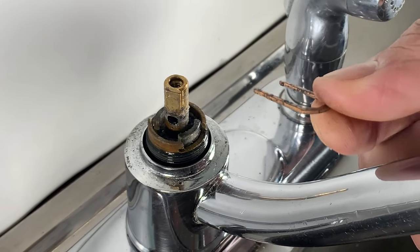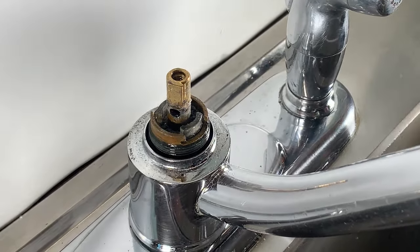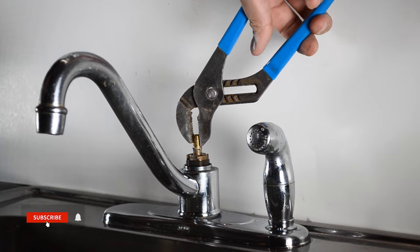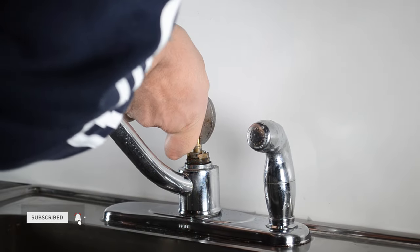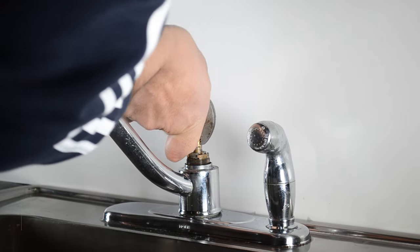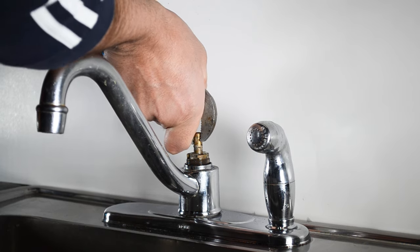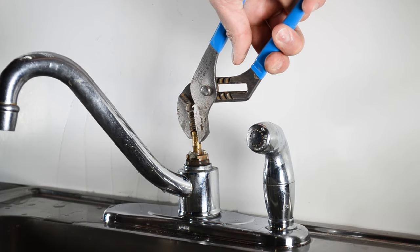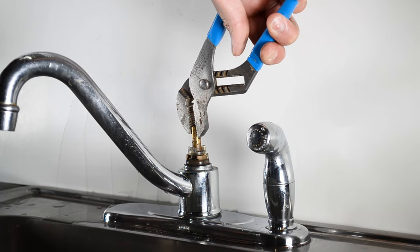Once the clip is off, use a channel lock or grip wise to remove the cartridge or a Moen cartridge puller if you have it. Sometimes it's hard to remove the old cartridge. You might need to pull it hard, but be careful, you don't want to damage anything.